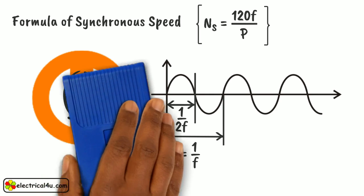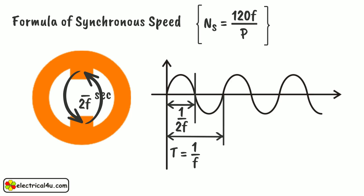Therefore, it takes 2 by 2f seconds to complete a revolution of 360 degrees.